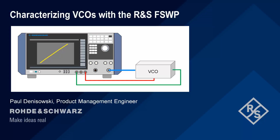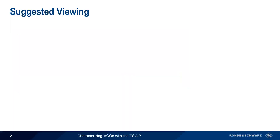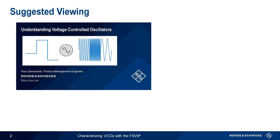Hello, and welcome to this presentation: Characterizing VCOs with the Rohde & Schwarz FSWP. In this presentation, we'll show the different ways that voltage-controlled oscillators can be characterized with the FSWP phase noise analyzer. This presentation assumes a basic understanding of voltage-controlled oscillators and how they're characterized. If you're not already familiar with these topics, you might want to watch the presentation Understanding Voltage-Controlled Oscillators before beginning.